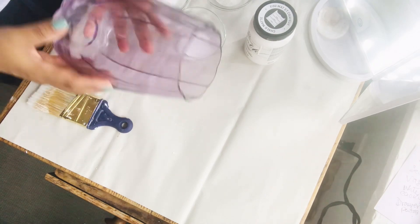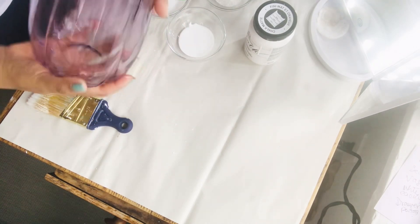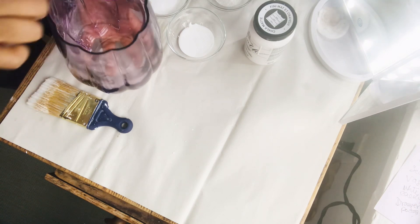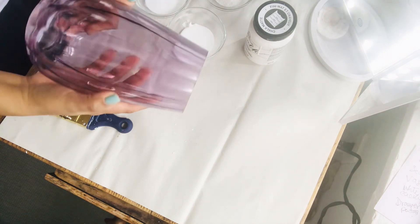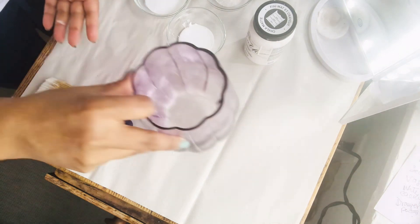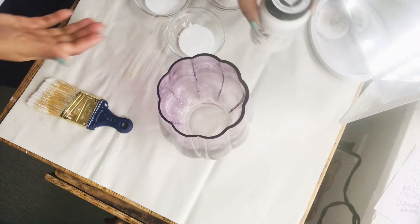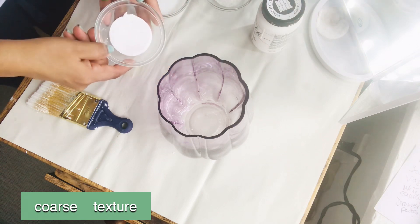For my next DIY, I'm gonna repurpose this beautiful glass vase. I love the shape of it, I'm gonna change the color. I don't like the purple one, so I'm gonna use my white chalk paint and I'm gonna create a texture by using sand and a little bit of baking soda. My purpose is to create a coarse texture.